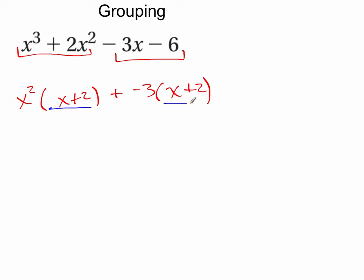The next thing I'm going to do is factor this x plus 2 out of each of these terms. So I'm going to pull x plus 2 out of x squared times x plus 2, and I'm going to be left with x squared.